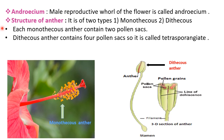Anther is of two types: the first one is monothecous and the second one is dithecous. Each monothecous anther contains two pollen sacs. For example, we see a monothecous anther in hibiscus. In a monothecous anther, only one anther lobe is present, hence it is called monothecous. In one anther lobe, only two pollen sacs are present. These pollen sacs are also called microsporangia.